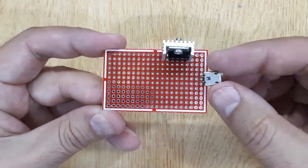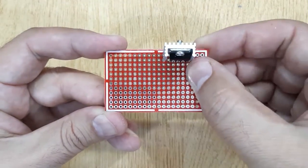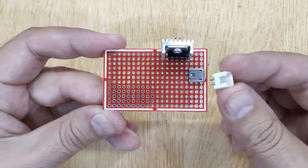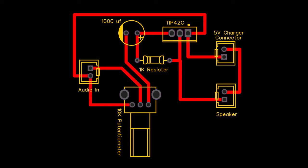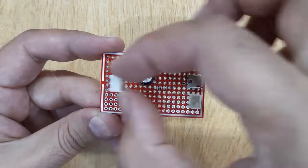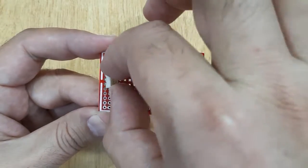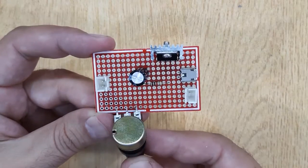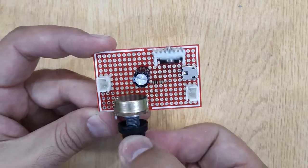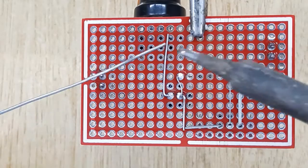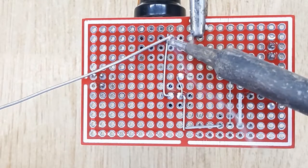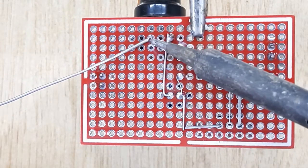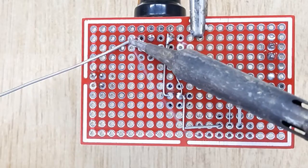Insert all the electronic components into the PCB one by one according to the circuit diagram shown on the screen. Solder all these components and remove the PCB from the third hand.